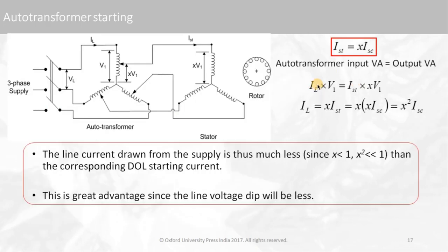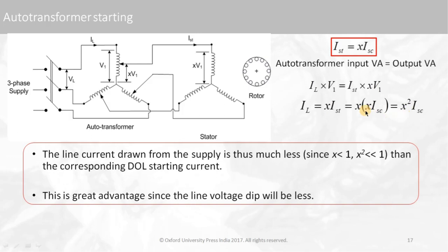Since in a transformer the input volt-amperes equal the output volt-amperes, for the auto transformer: input current is I_L at voltage V₁, and output voltage is x·V₁ at current I_start. Therefore I_L · V₁ = I_start · x·V₁, so V₁ cancels and I_L = x · I_start. Since I_start = x · I_sc, it becomes I_L = x² · I_sc.